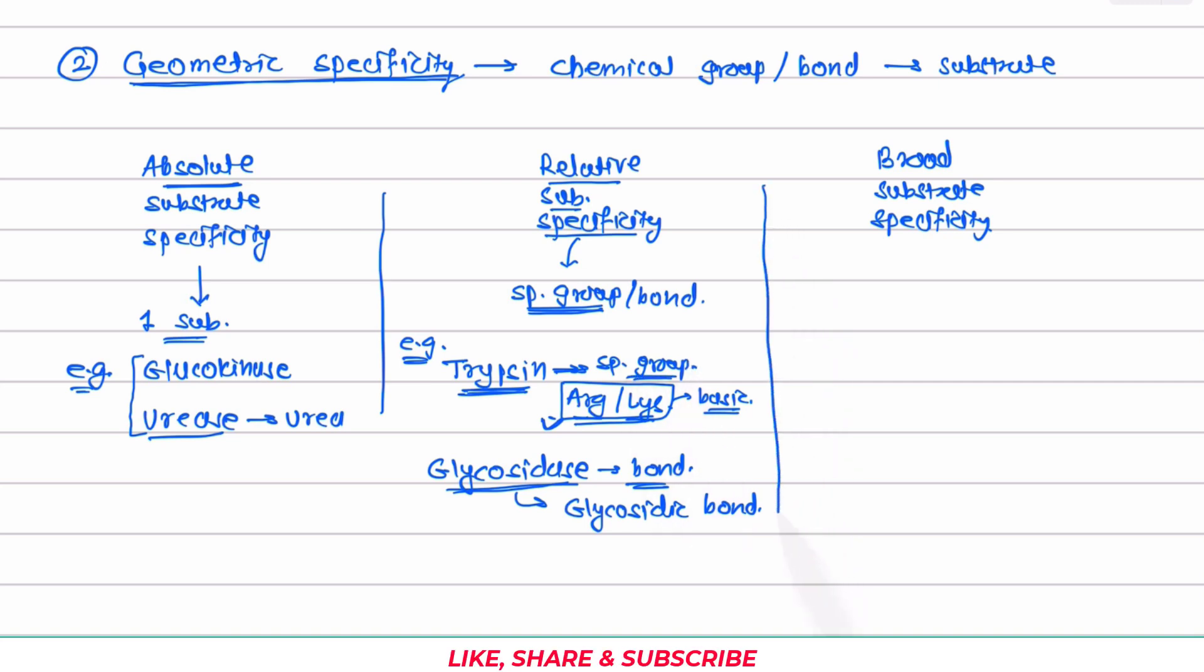The third type of geometric specificity is the broad substrate specificity. Here enzyme acts on a large number of substrate. Here the substrate range is very wide. They may not be even related with the specific group or bond. Let us look at the example.